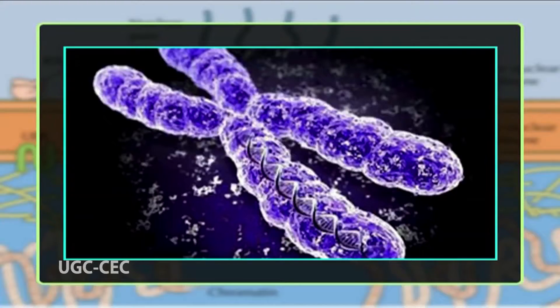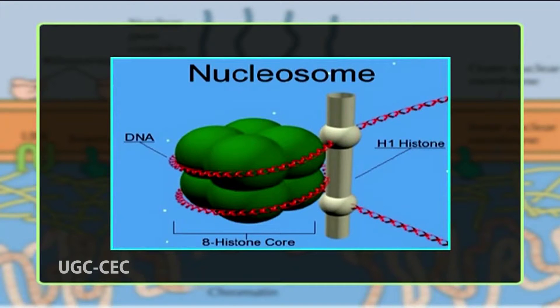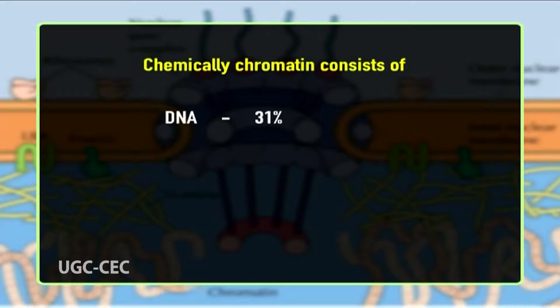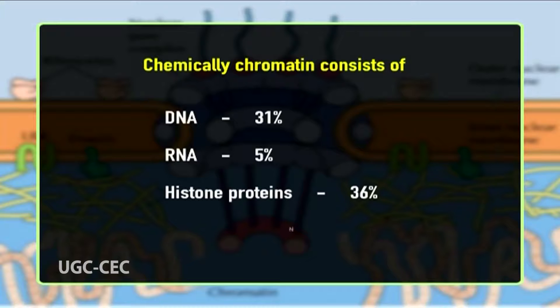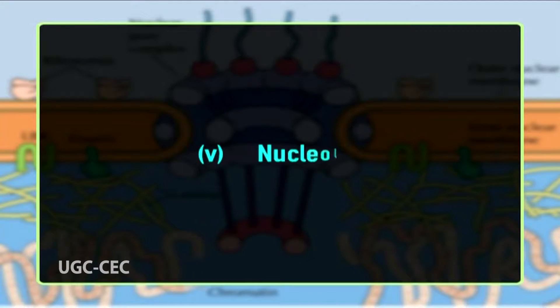Fourth, chromatin is an intranuclear system of brightly stained, long and fine fibrils which overlap one another and form an apparent network known as the chromatin reticulum. Chromatin fibers contain genetic information and are formed of DNA-histone complexes; the units of the latter are nucleosomes. Chemically, chromatin consists of DNA (31%), RNA (5%), histone proteins (36%), and non-histone proteins (28%).